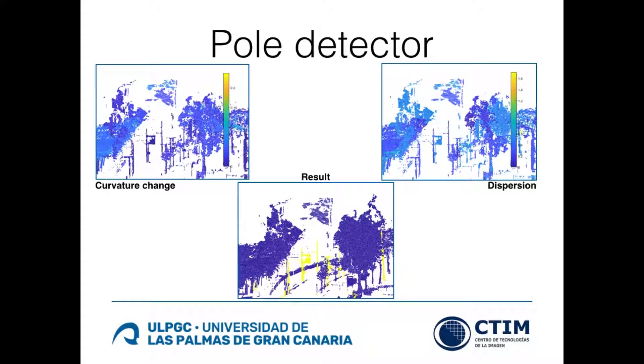To find the poles, an omnivariance feature map is used instead to discriminate the points for clustering. Per cluster, descriptors of curvature change, minimum height, dominant component, and deviation of the XY values are computed. These descriptors allow us to determine which clusters represent poles.